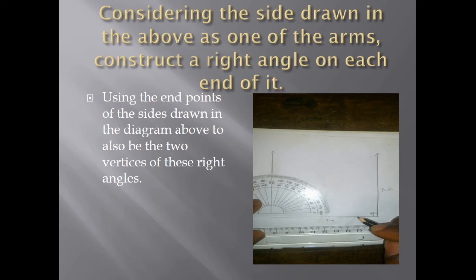Considering the side drawn in the above as one of the arms, construct a right angle on each end of it. Using the endpoints of the side drawn in the diagram above to also be the two vertices of these right angles.